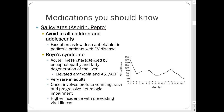Salicylates — examples include aspirin products and Pepto-Bismol (bismuth subsalicylate). Generally avoid in all children and adolescents. The exception is low-dose anti-platelet therapy in pediatric patients with indicated cardiovascular disease, a very unusual subset. Salicylates can cause Reye's syndrome — an acute illness characterized by encephalopathy and fatty degeneration of the liver. Standard Pepto-Bismol contains a salicylate; a pediatric-friendly version uses calcium carbonate instead. Stick to Tylenol or ibuprofen for pain in kids.